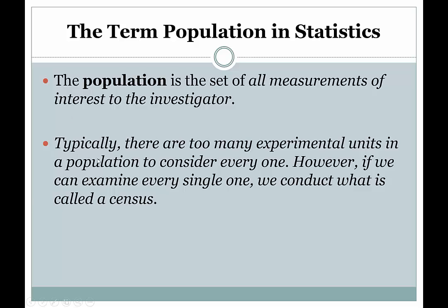There's a note that says typically there are too many experimental units or subjects in a population to consider every one. However, if we can examine every single one, we conduct what is called a census. So if you actually went out and asked every single college student what their age was, you'd be conducting a census of college students living in the United States. That's why we call the attempt to count every member of the U.S. population a census — it's our attempt to take a measurement from the entire set of subjects living in the United States.